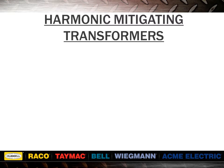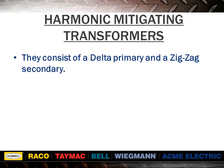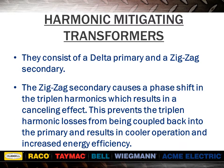Next, we will discuss harmonic mitigating transformers. They consist of a delta primary and a zigzag secondary. The zigzag secondary causes a phase shift in the triplin harmonics, which results in a canceling effect. This prevents the triplin harmonic losses from being coupled back into the primary and results in cooler operation and increased energy efficiency.